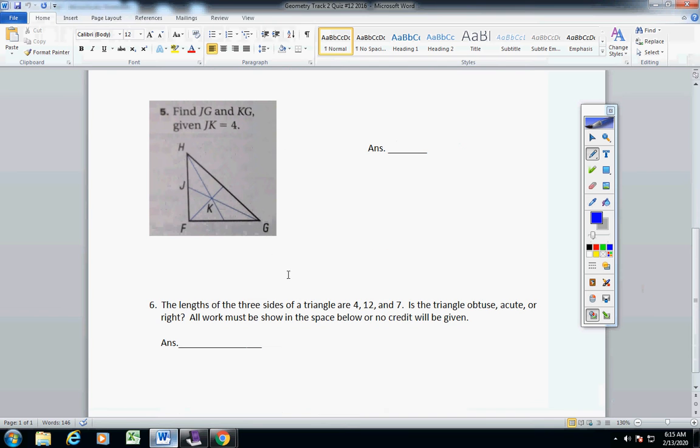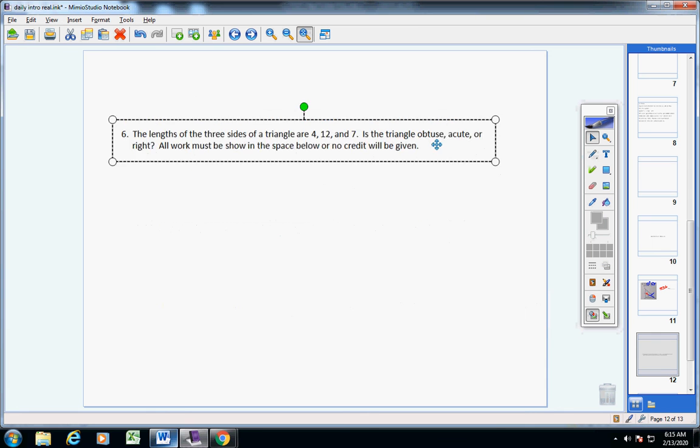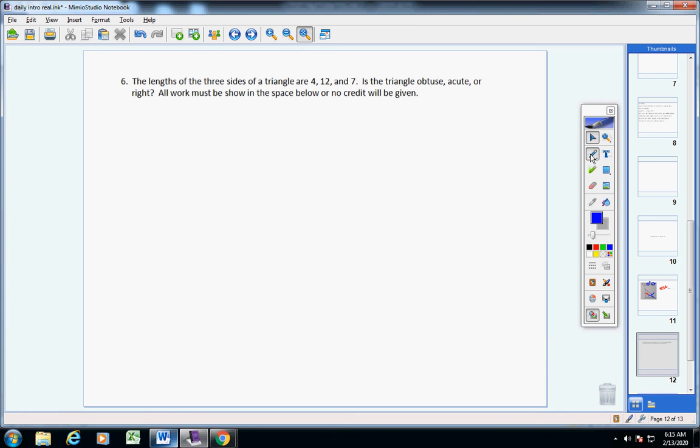Now, this last problem here you missed. So, let me help you with this, Chris. Please watch this. Look. Anytime I give you the three sides, measurements of a triangle, and I ask you, is the triangle obtuse or acute or right? It's really simple what you do. Please watch this. You take the two smaller sides. In this case, it's four and seven, and you square them and add them together. That's so easy. So, four times four is 16. Seven times seven is 49.